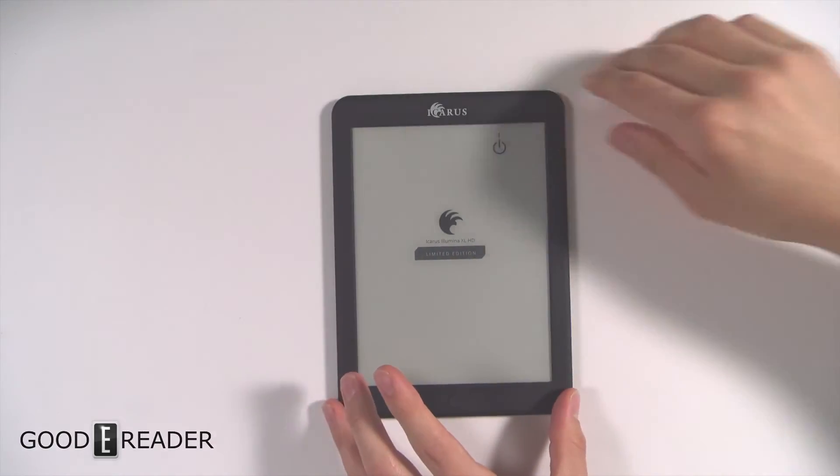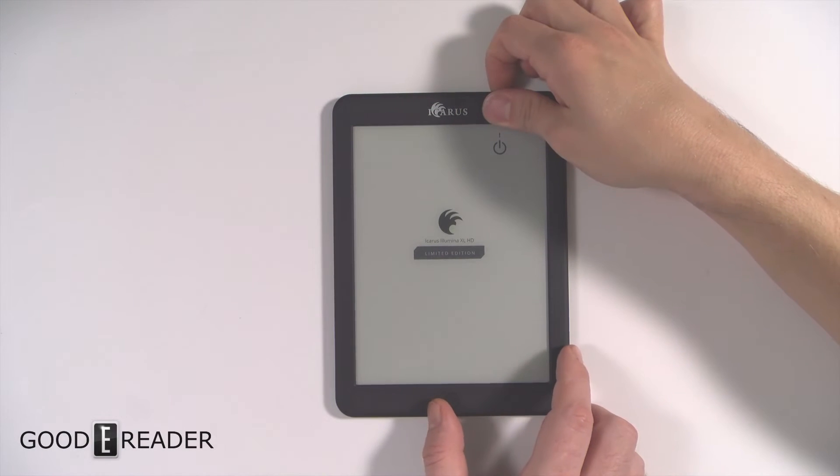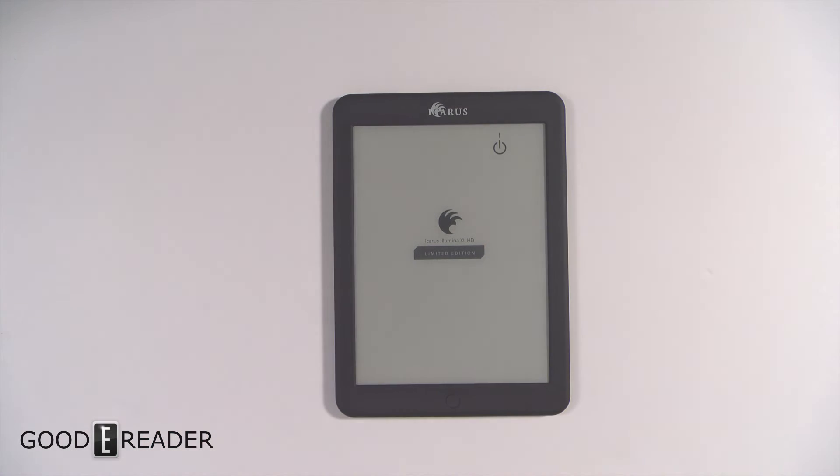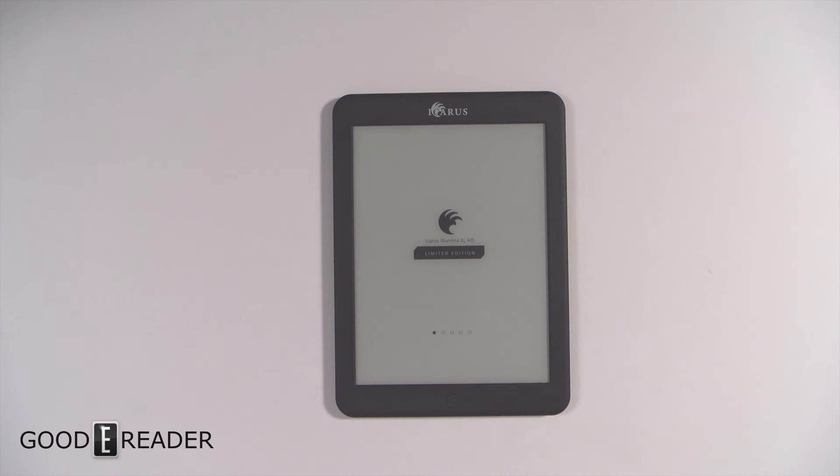Yeah, it has a front-lit display, so you'll be able to read in the dark. It has 10 LED lights that project light upwards for even light distribution. I dig the 3.5mm headphone jack because it allows you to listen to podcasts, music, and more importantly, audiobooks.